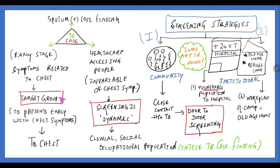We screen every person presenting with these symptoms to check if they are positive for TB or not. Invariably we screen every person coming to hospital — that is healthcare-accessing people — especially the clinically, socially, and occupationally related or vulnerable population. Thereby we intensify TB case finding and reduce TB prevalence in the community.